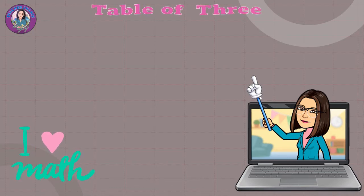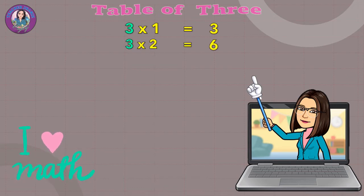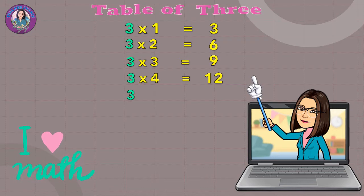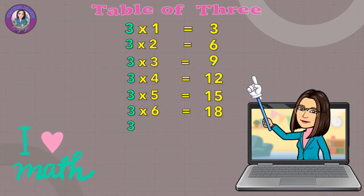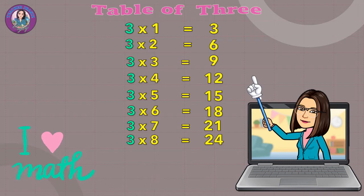Table of 3. 3 x 1 equals 3. 3 x 2 equals 6. 3 x 3 equals 9. 3 x 4 equals 12. 3 x 5 equals 15. 3 x 6 equals 18. 3 x 7 equals 21. 3 x 8 equals 24. 3 x 9 equals 27.